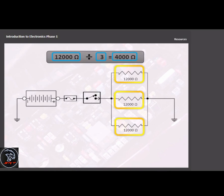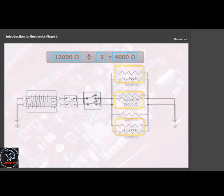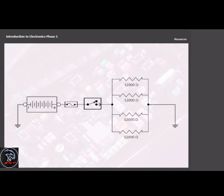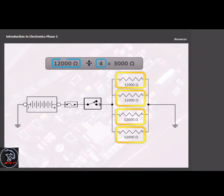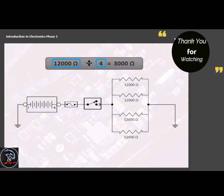This example shows four parallel 12,000 ohm resistors. Using the process from the previous examples, the calculated total circuit resistance is 3,000 ohms. Calculating the total circuit resistance when the resistance values are different requires a bit more math.